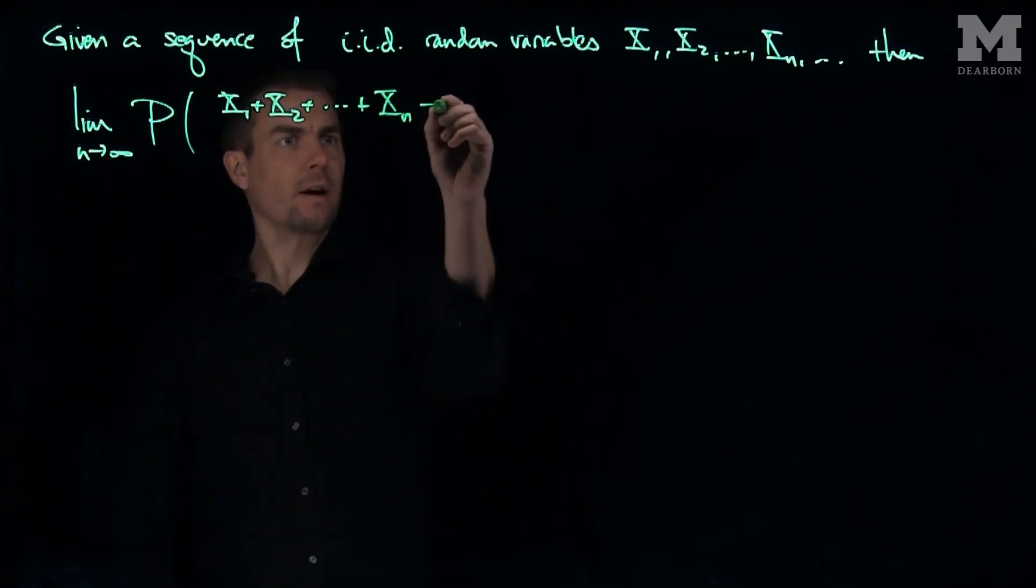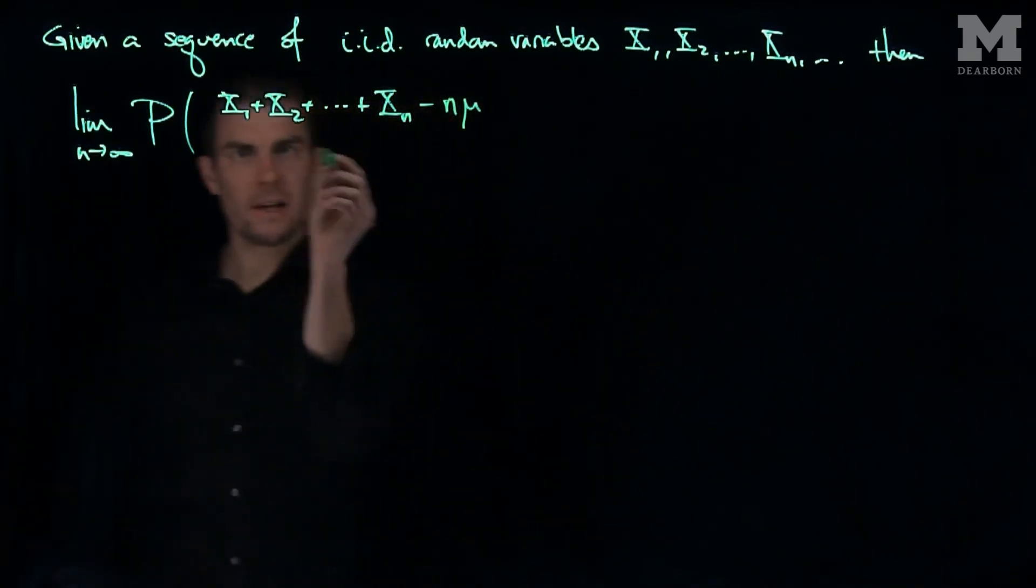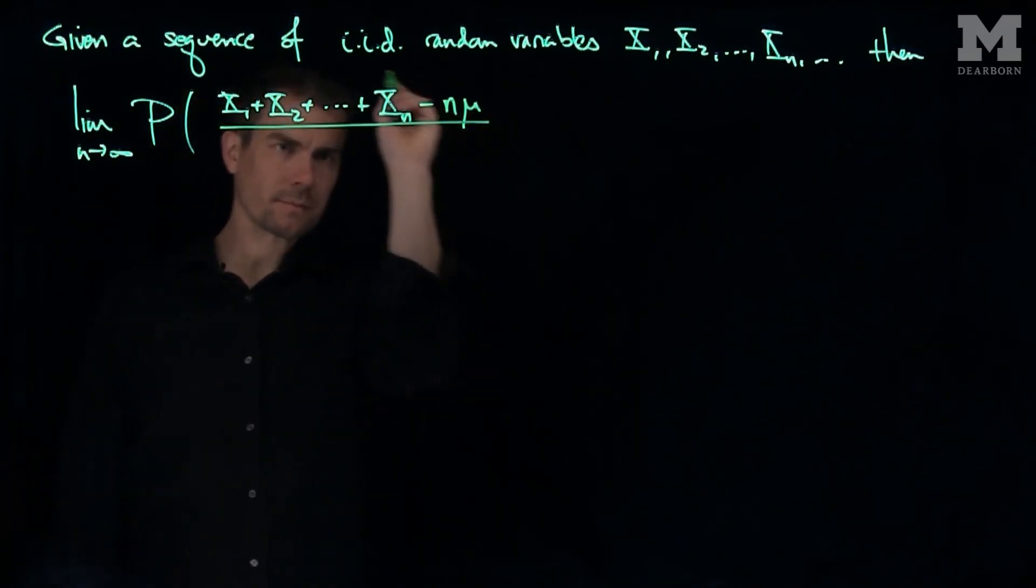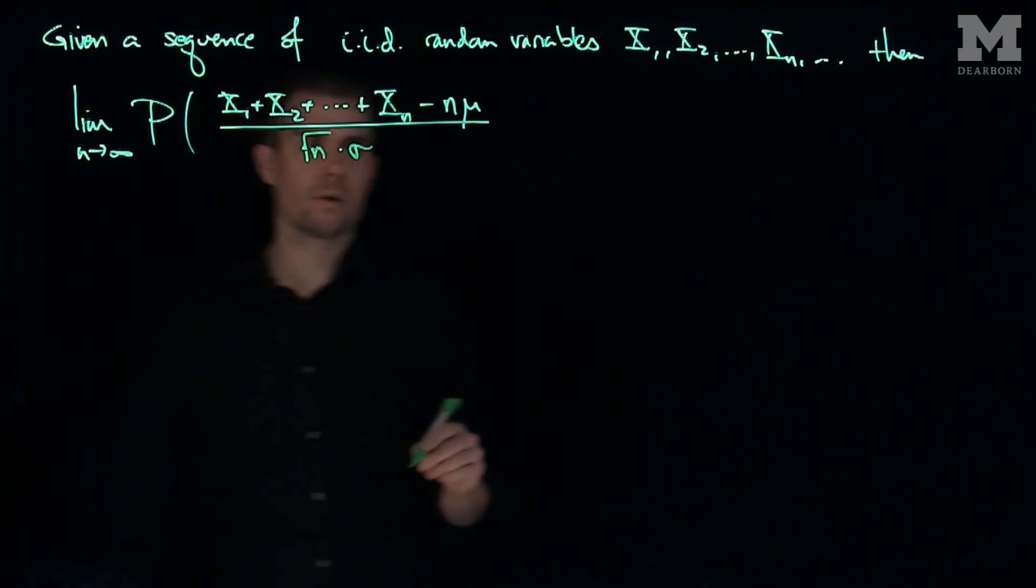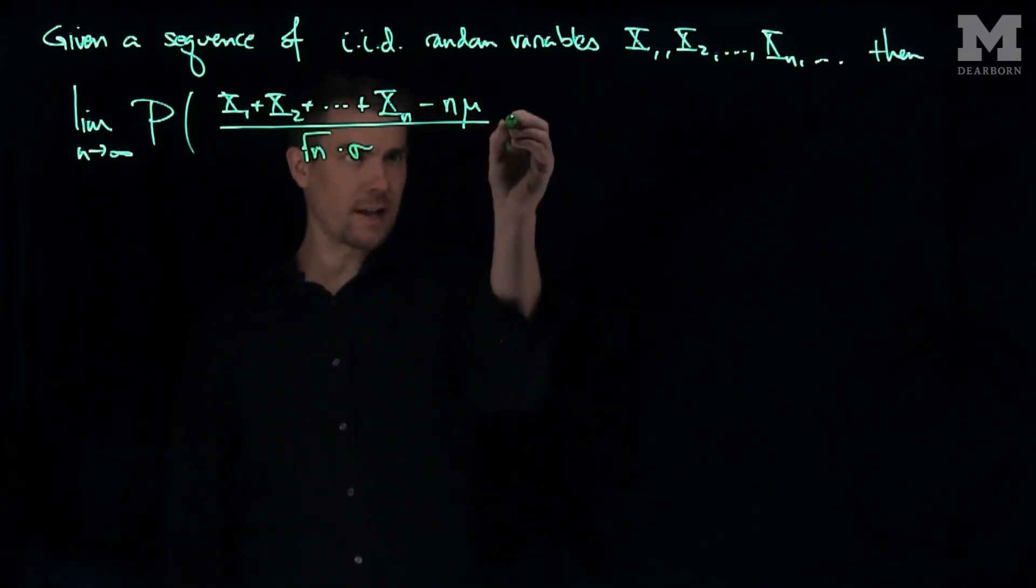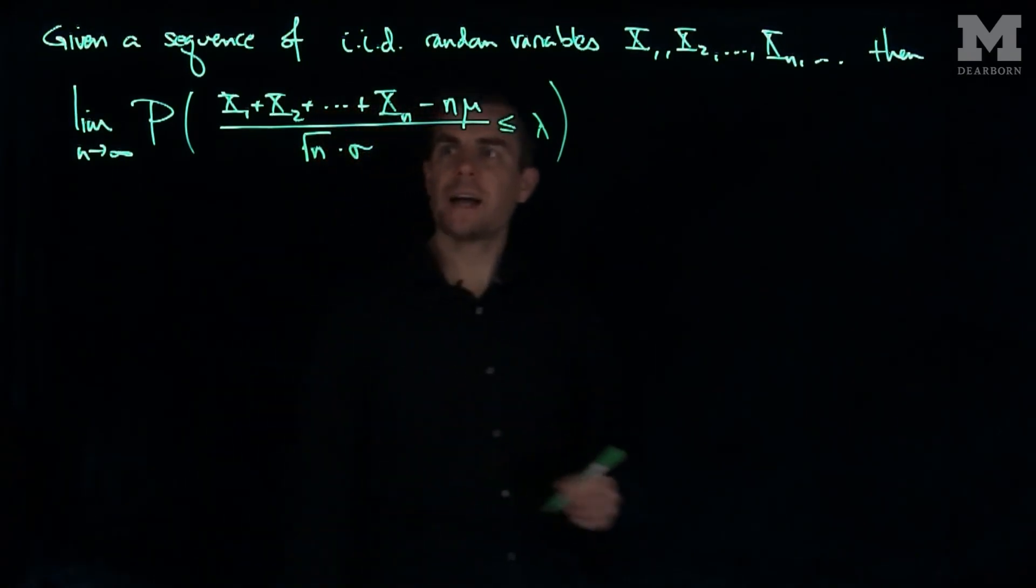And I subtract off n times mu, where mu is the mean of any one of those random variables, and divide it by the square root of n times the standard deviation of one of those variables. I can get the probability that this is less than or equal to a fixed value lambda as n goes to infinity.